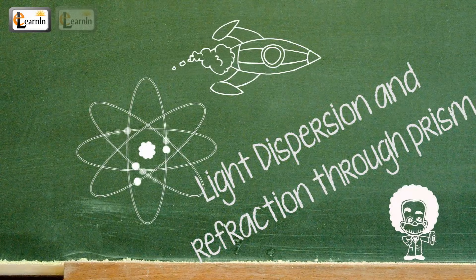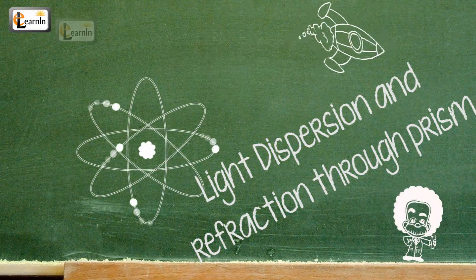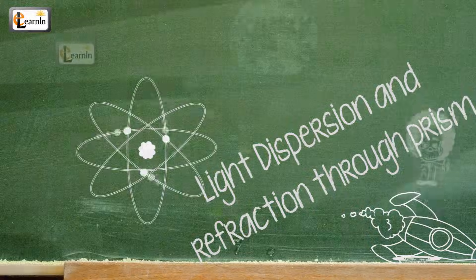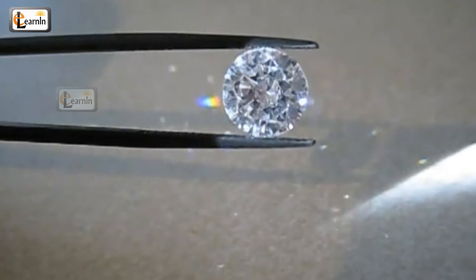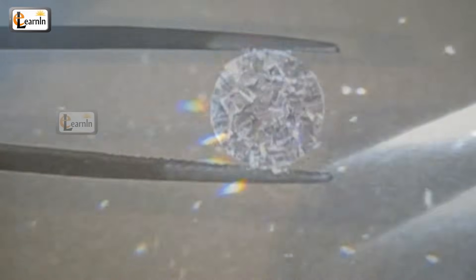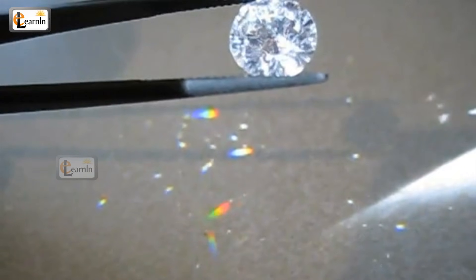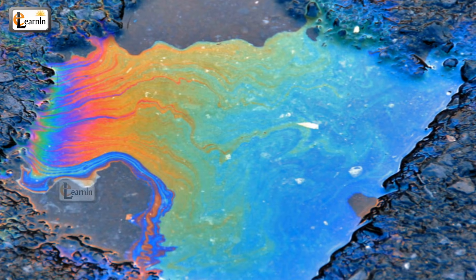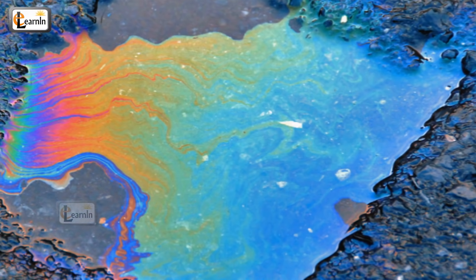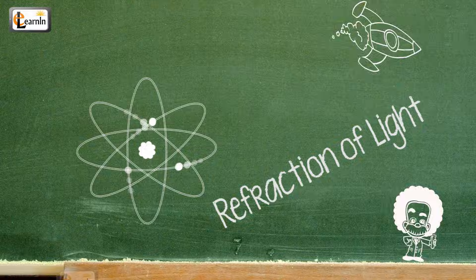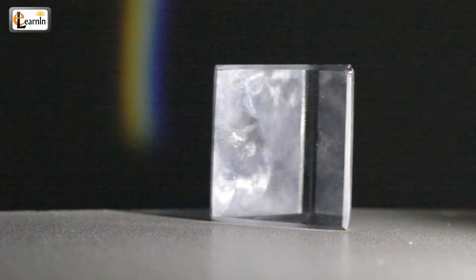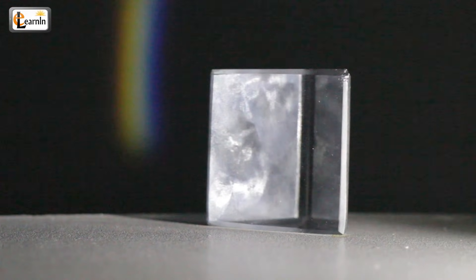Light dispersion and refraction through a prism. Have you ever noticed that diamonds sparkle in sunlight and give out different colors? Just like oil spilt on any surface showcases different colors, the reason behind this phenomenon is the refraction of light. Before we understand what refraction is, let us conduct this easy and cool experiment.